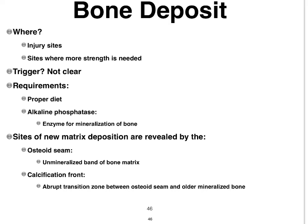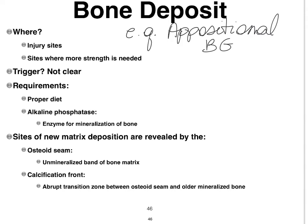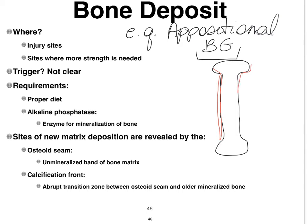When bone deposit occurs, it will very often be in the form of appositional bone growth — or perhaps we should call it appositional bone deposit. If this is our long bone, with the periosteum around the diaphysis and part of the epiphysis, the osteoblasts can start secreting bone tissue onto the existing diaphysis in that direction. That is what we call appositional bone growth or appositional bone deposit.